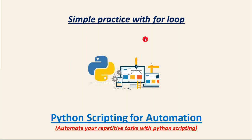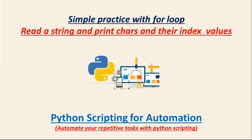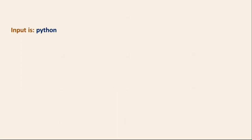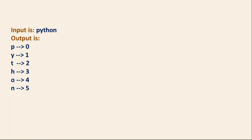Friends, here we are going to do one simple practice with your for loop. I'm going to write a simple Python script. The requirement is: read a string and print characters and their index values. Suppose if you run your Python script, it has to ask 'Enter your input', then enter some input. Let's say I'm going to enter 'Python'. Then it has to give output — P Y T H O N — and also print the index value of your letters or characters.